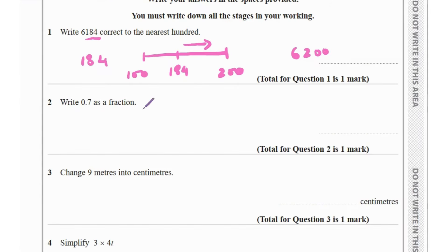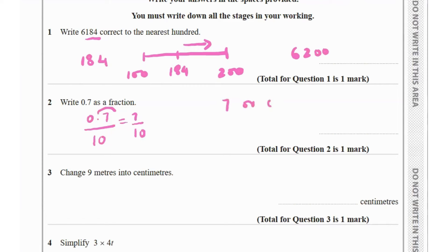Question 2 says write 0.7 as a fraction. 0.7 is written as 7 over 10. We move the decimal one place to the right-hand side and add a zero to the denominator. Every number has a denominator of 1, so 0.7 also has a denominator of 1. When we move the decimal one place to the right, we add one zero in the denominator. Hence, 0.7 becomes 7 over 10.